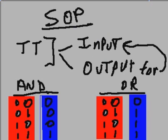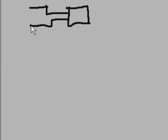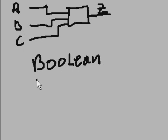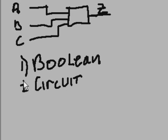How do I do that? Well, first I have to have a problem to do, so let's make up a problem. In this problem, we have a black box with three inputs and one output. We'll call the inputs A, B, and C, and the output Z. We want to make a Boolean expression for this, and then build a circuit based on that Boolean expression.